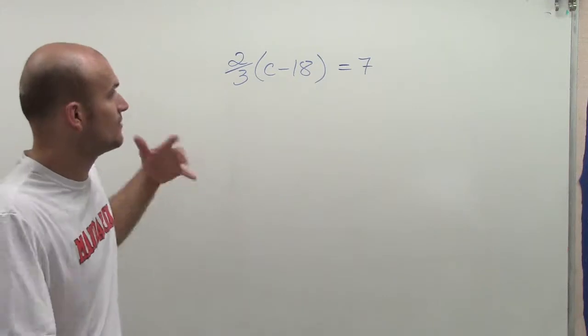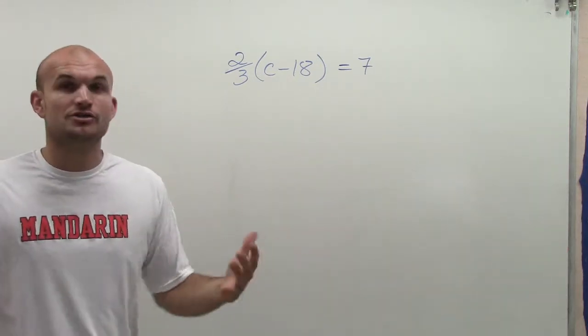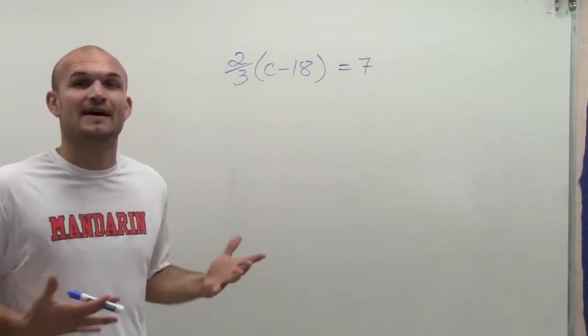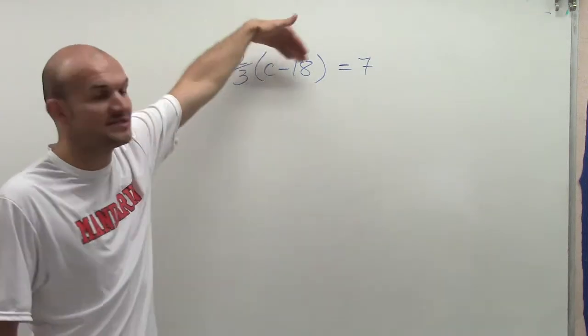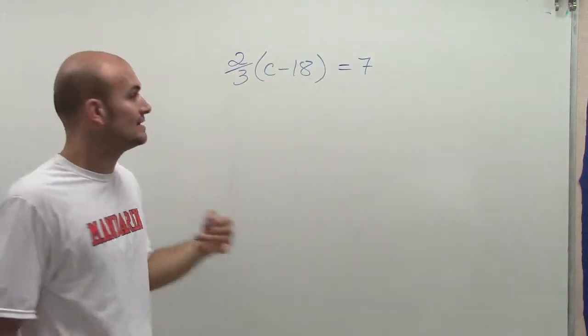Automatically when I see the parentheses, I want to take a look and see, using my order of operations, can I simplify the left side at all? I have c minus 18, those are not like terms, so I cannot combine them.